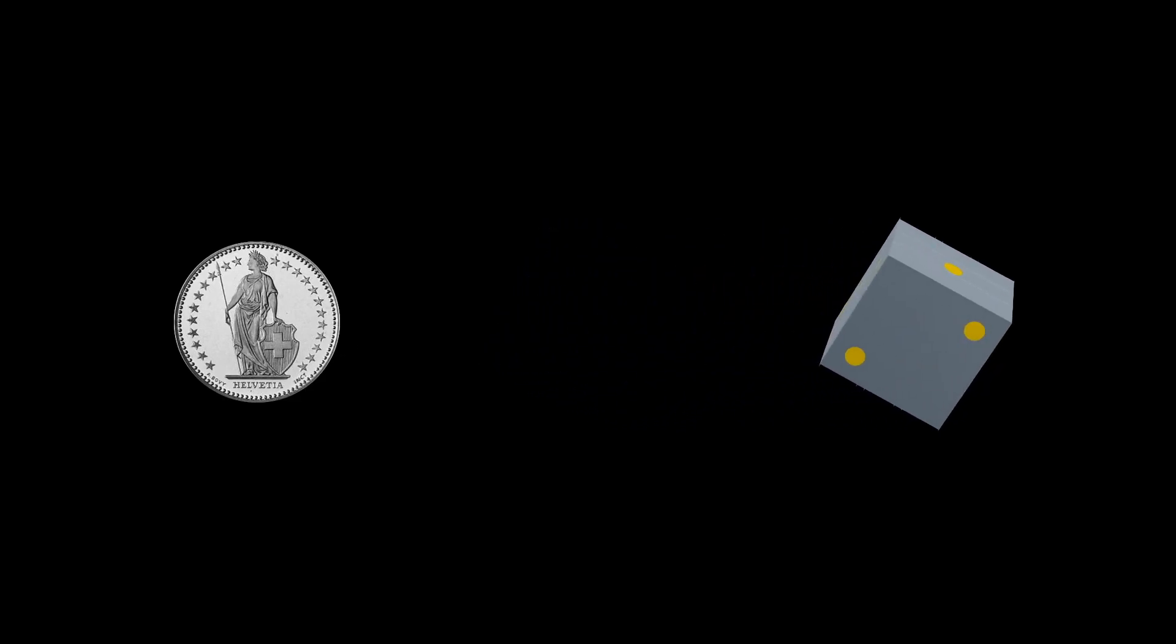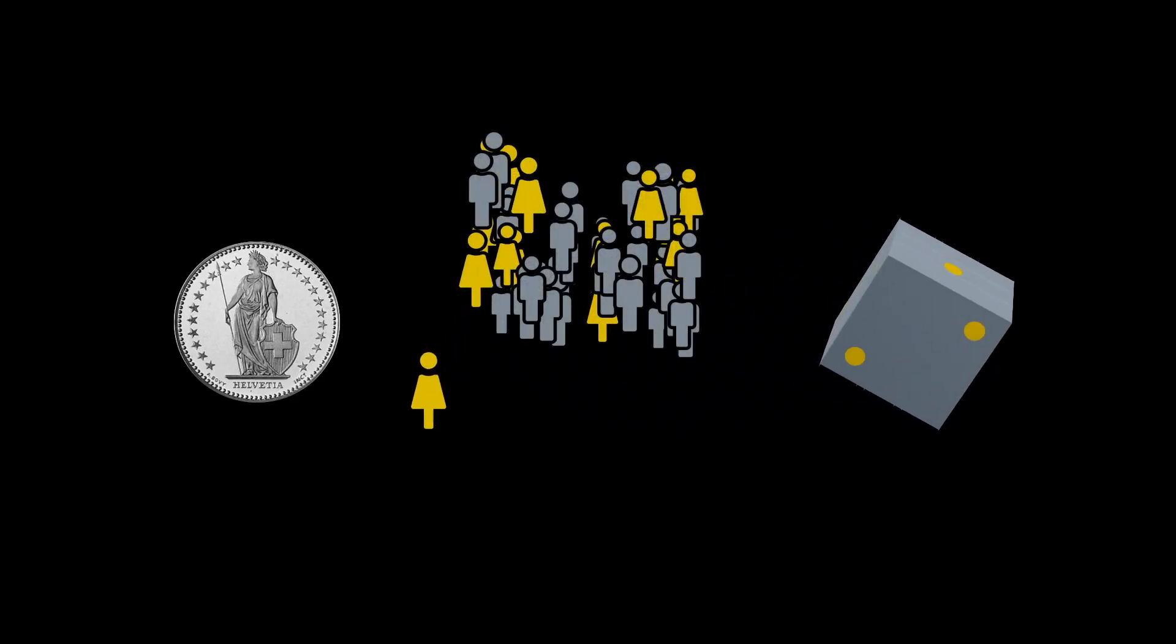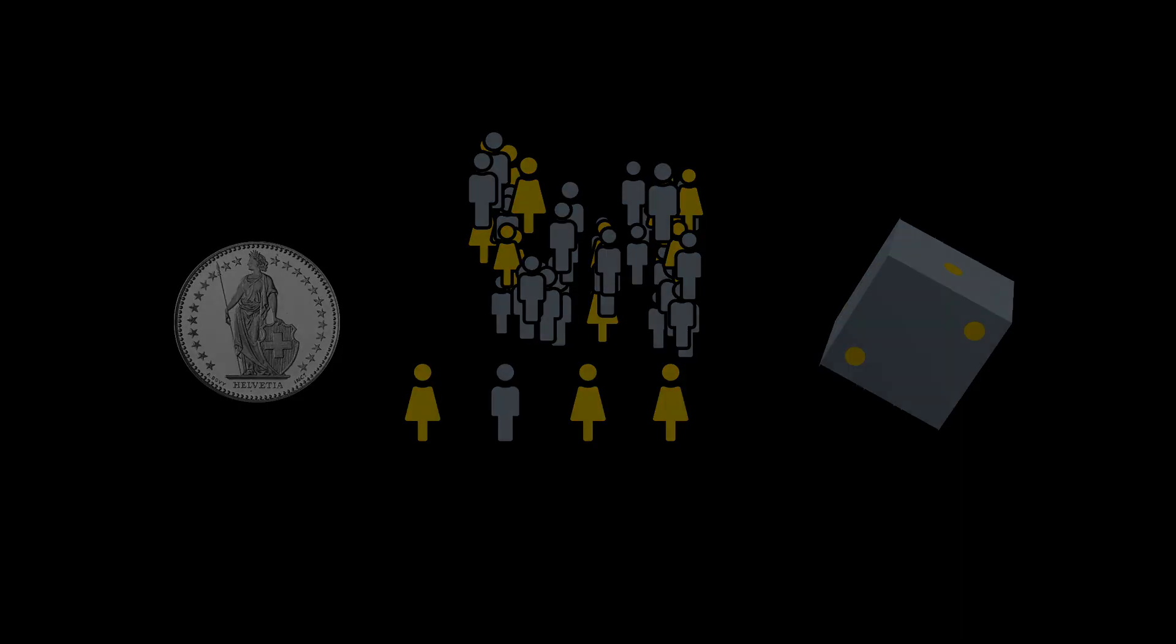Random variables are often introduced using coin tossing, dice, or sampling people from a population, because traditionally statistics comes from hazard games and practical applications in social sciences. However, I believe this approach can be misleading, since a random variable is fundamentally a mathematical object.